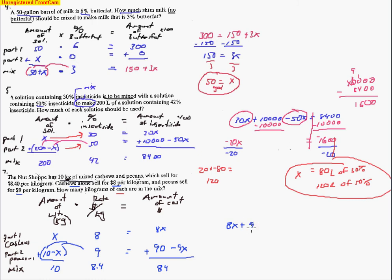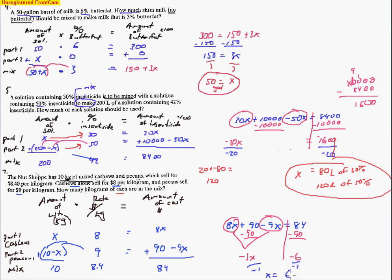Setting up the equation: 8x plus 90 minus 9x equals 84. Subtracting 90 from both sides gives negative 1x equals negative 6. Dividing by negative 1, x equals 6. Since x represented cashews, we have 6 kilograms of cashews. For the pecans, substitute 6 back in for x: 10 minus 6 equals 4. So we have 4 kilograms of pecans.